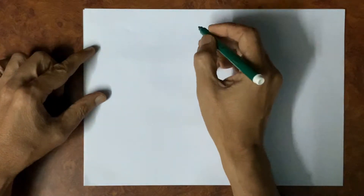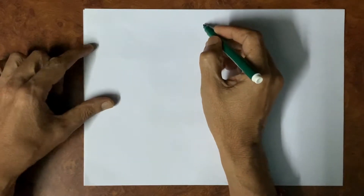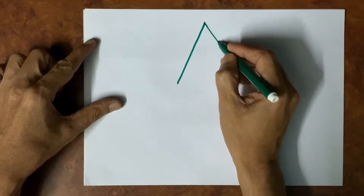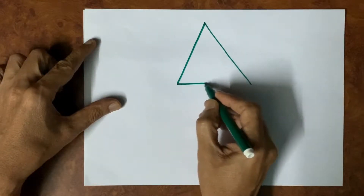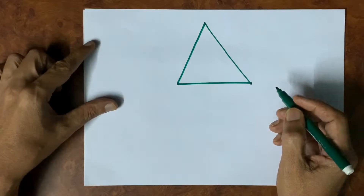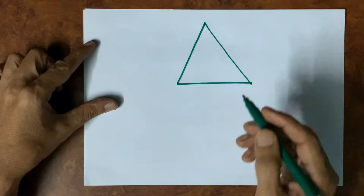Hello viewers, today we will study a very important topic: to prove that the sum of three angles of a triangle is equal to 180 degrees.